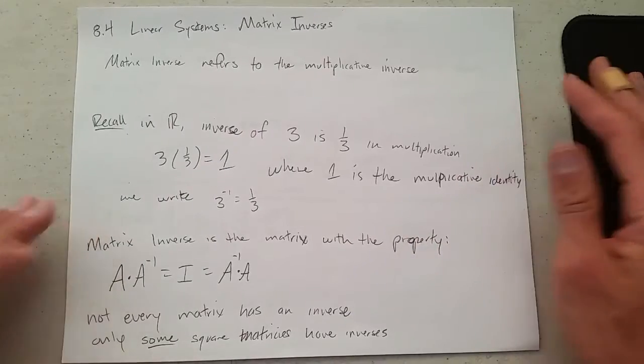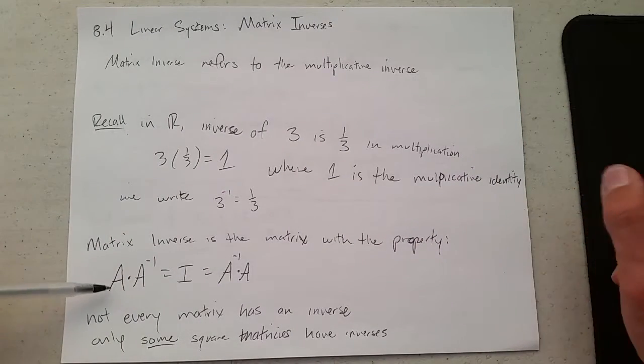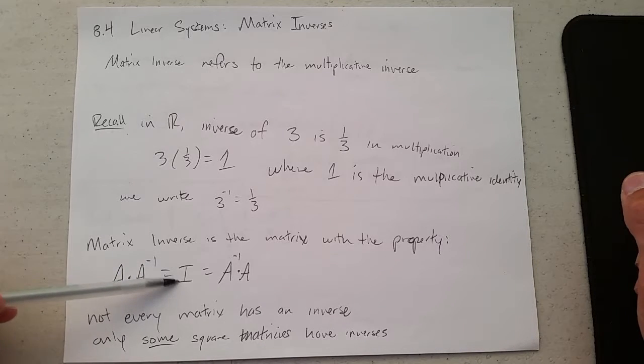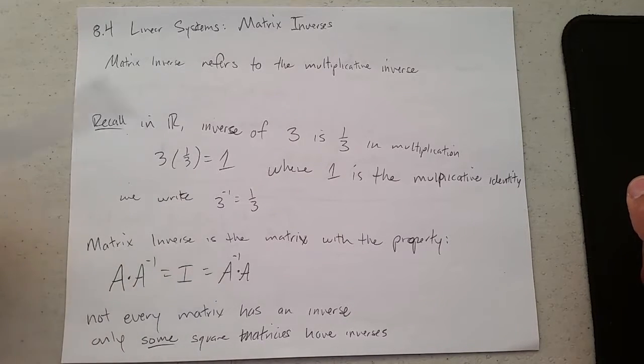Matrix inverse is very similar. It is the multiplicative inverse, so A times A inverse would be the identity matrix, which would equal A inverse times A.